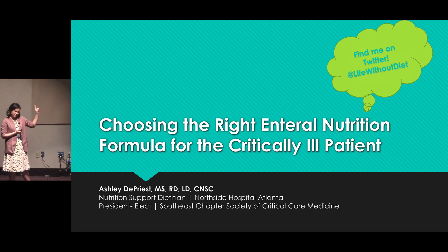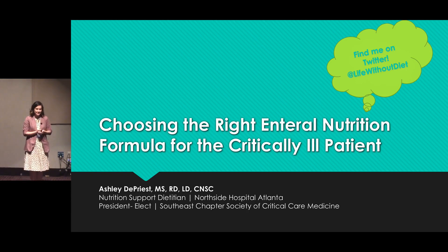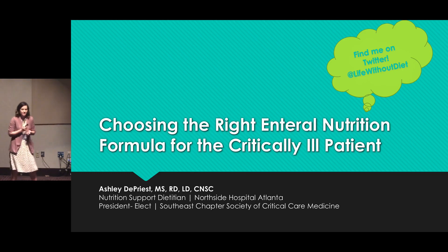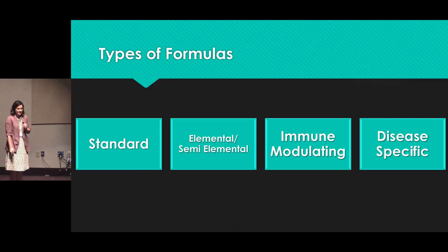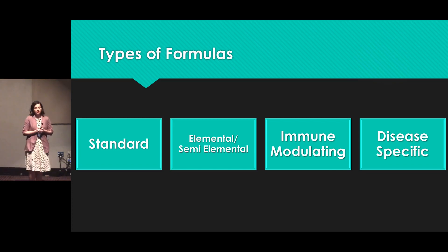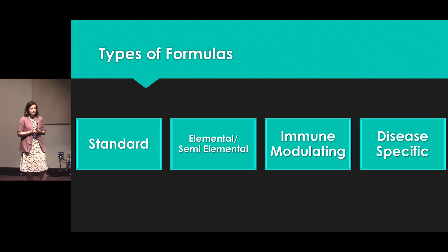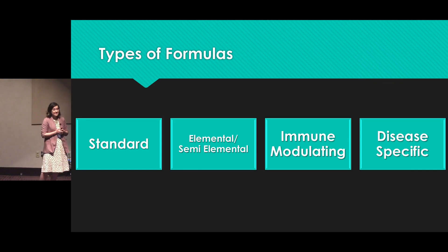Small shameless plug — find me on Twitter. I'm very active and I love talking to people about enteral nutrition and nutrition in general. So there are four main types of enteral nutrition formulas: standard formulas, elemental or semi-elemental formulas, immune modulating formulas, and disease-specific formulas.